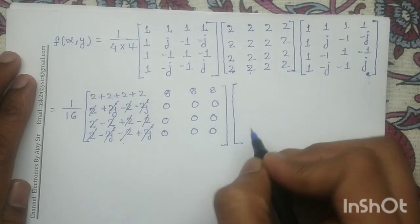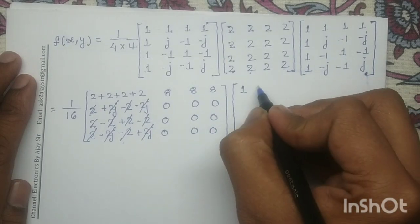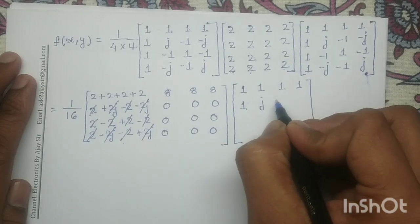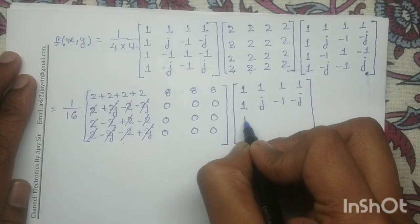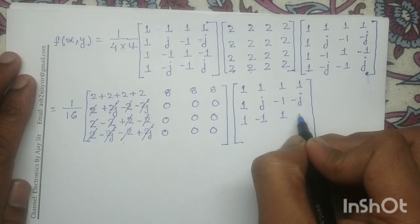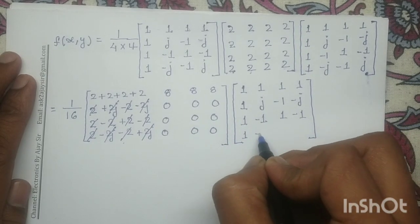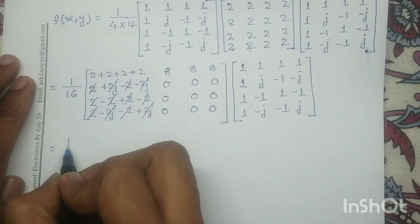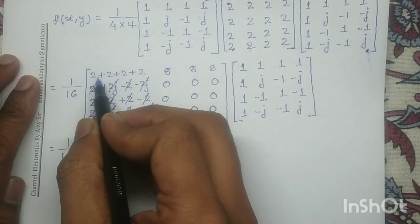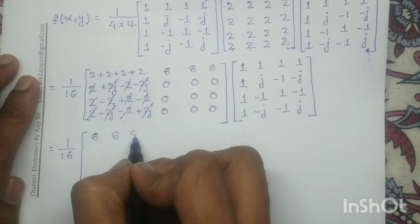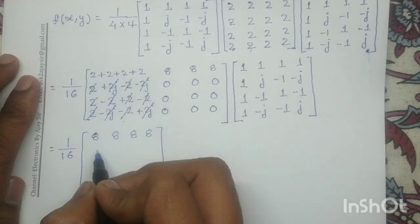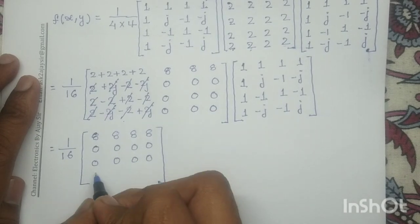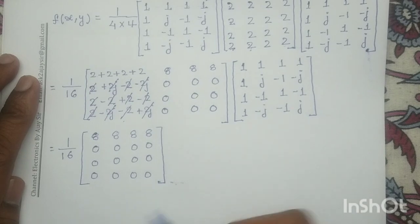So after this multiplication, the intermediate result is: first row [8, 8, 8, 8], second row [0, 0, 0, 0], third row [0, 0, 0, 0], and fourth row [0, 0, 0, 0]. Now we multiply this by the kernel transpose: [1,1,1,1; 1,j,-1,-j; 1,-1,1,-1; 1,-j,-1,j] transposed.